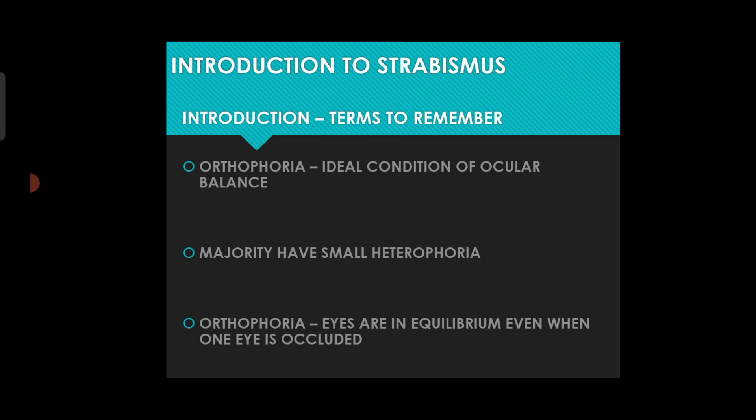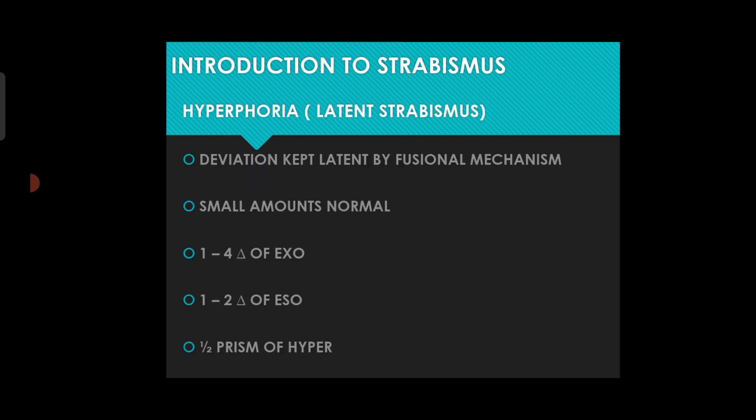In latent strabismus there are three conditions: orthophoria, which is the ideal condition of ocular balance; heterophoria, which includes esophoria and exophoria. Orthophoria only occurs when the eyes are in equilibrium even when one eye is occluded. Hyperphoria is when the deviation is kept latent by the fusion mechanism.